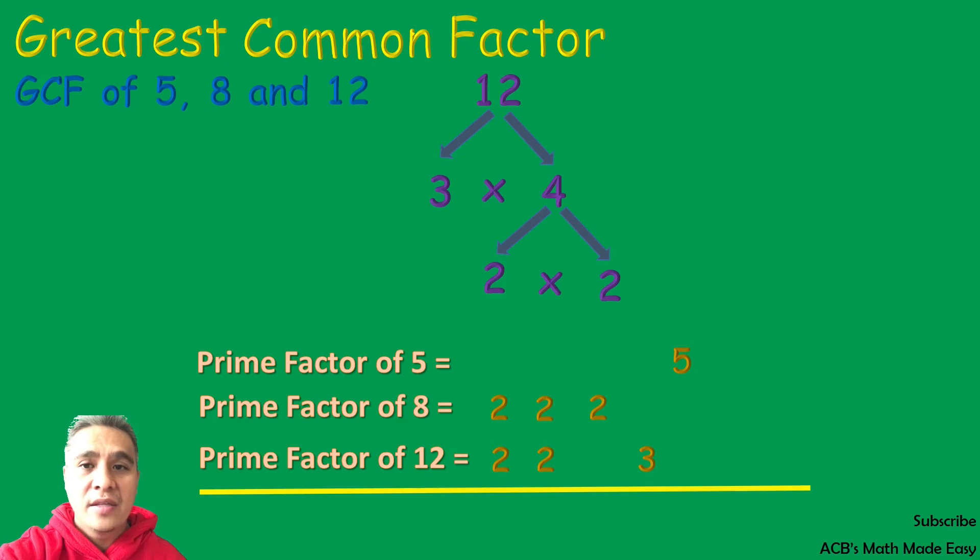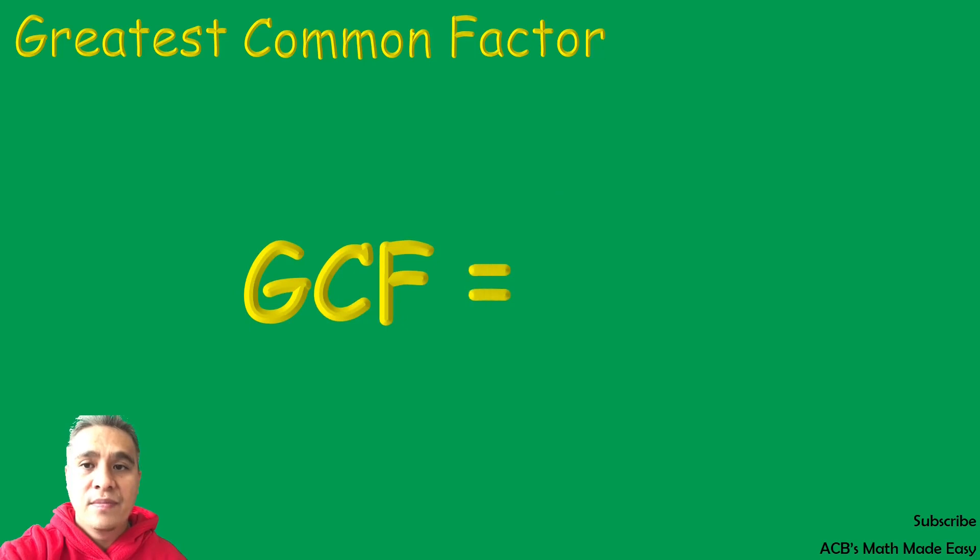5, 8, and 12 have no common factors, so it means, as I said before, that 1 is a common factor to all numbers. So our GCF of 5, 8, and 12 is 1.